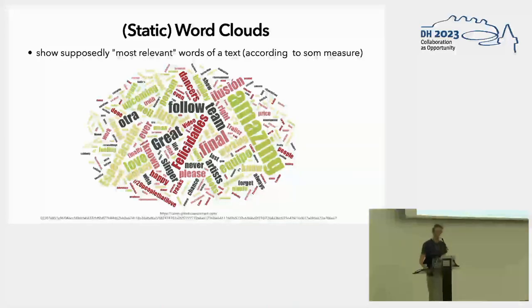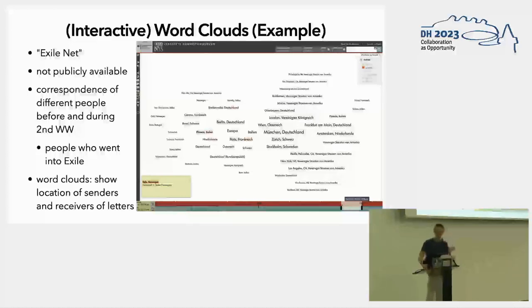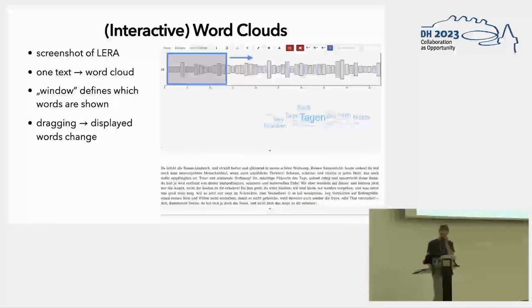And there's a different type of word clouds, I call them interactive word clouds. I was told to show an example of that and here is an example. So our research group created this project called ExileNet and there you can find an interactive word cloud. It was about the correspondence of different people before and during the Second World War and the people who went to exile. So in the word cloud there is correspondence displayed, where the letters were written and received. And the interactive part is actually at the bottom, so you see a timeline and you can pick two dates and only the letters inside this time span are displayed.